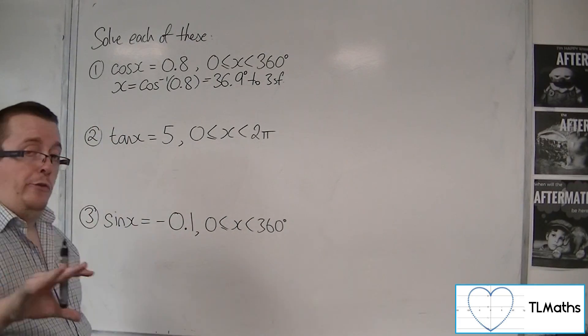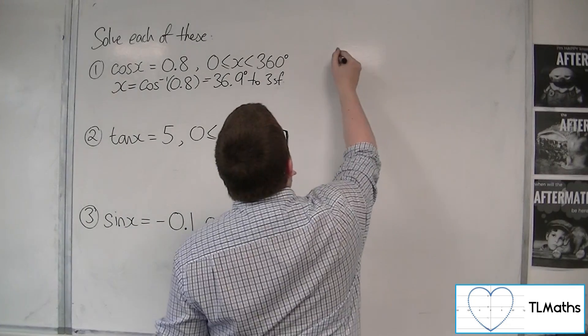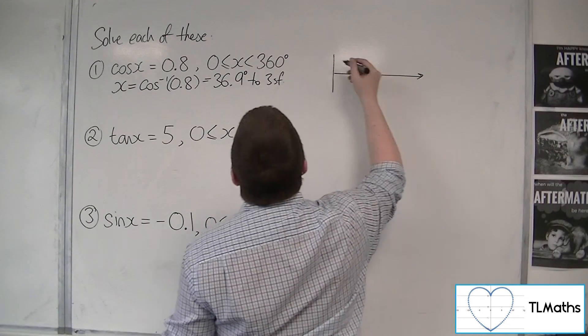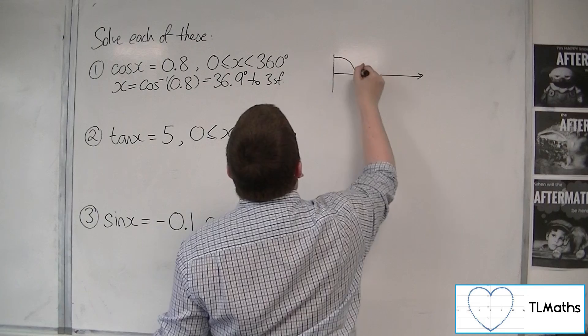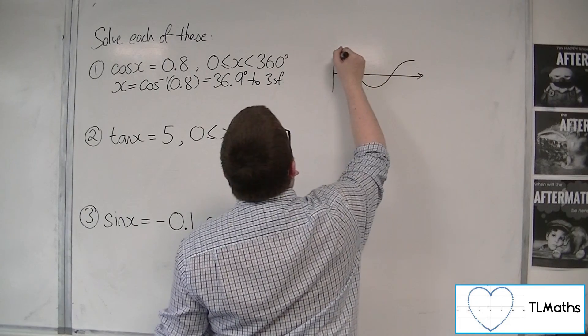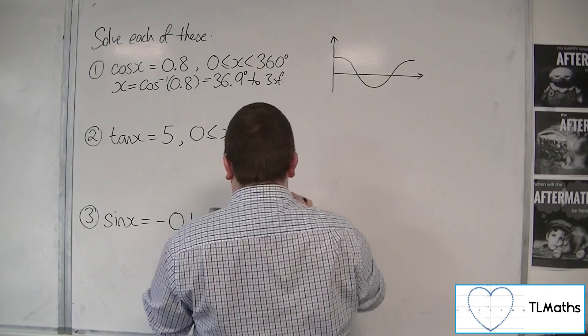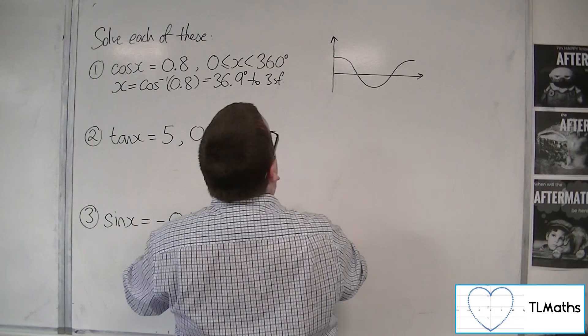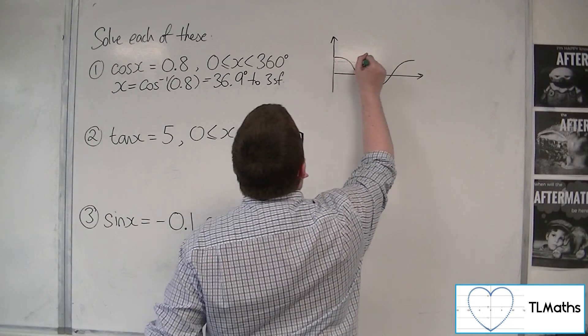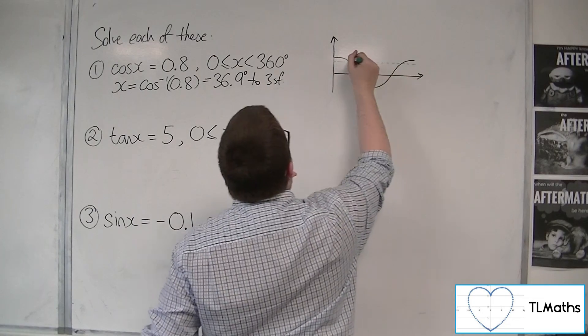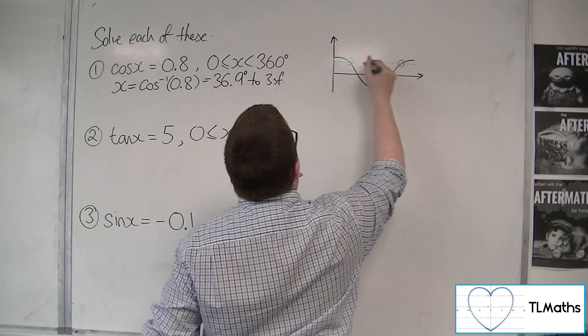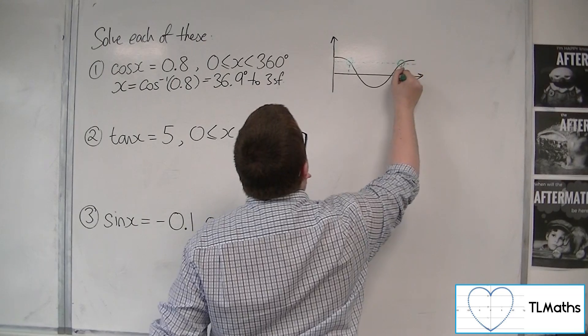I now sketch the curve. We're going to sketch cosine. The maximum point's at 1, so 0.8 would be a horizontal line looking something like that. We can see that it's crossing the curve at these two points.